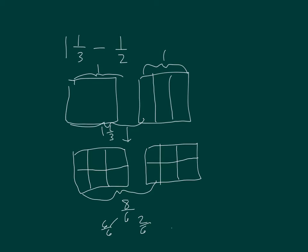So I can subtract it right here — 1, 2, and 3. So our answer for 1 and 1 third minus 1 half is 5 sixths. That was 8 sixths minus 3 sixths, equaling 5 sixths.